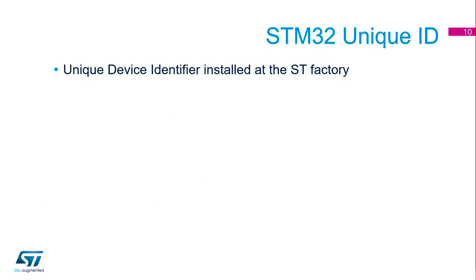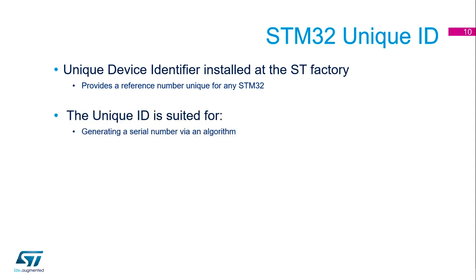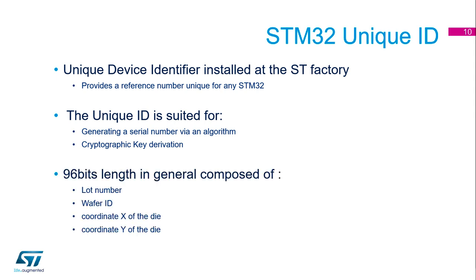STM32 unique ID — this is the first security resource we see together. It's a unique device identifier installed at the ST factory. It provides a reference number unique for any STM32 in one family. It's suitable to generate a serial number via an algorithm, or also to use some derivation of cryptographic keys. It was 96 bits in length, and in general it's composed of a lot number, some wafer ID, and coordinate X and Y of the die.